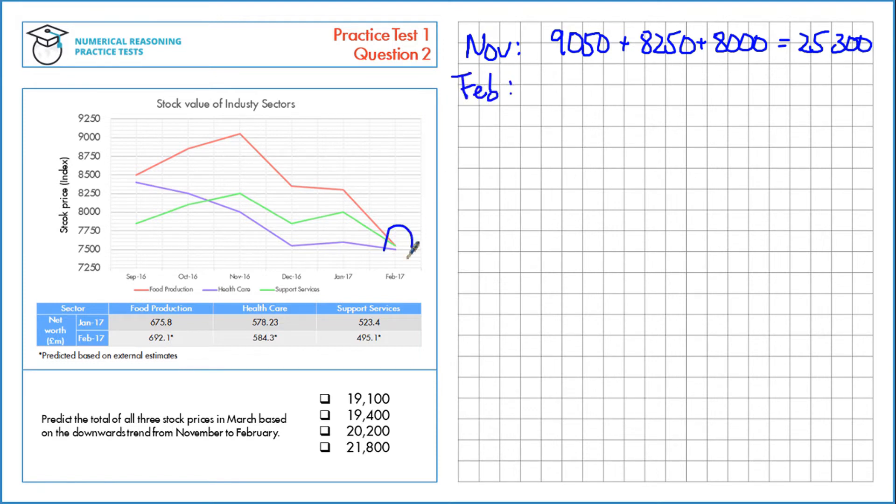If we're looking at the February figures now, that's these ones here. That's 7,550 plus another 7,550 plus 7,500 is 22,600.